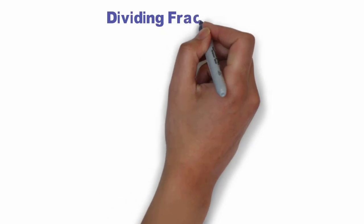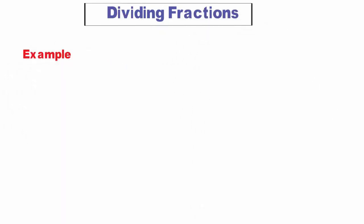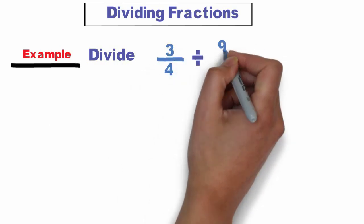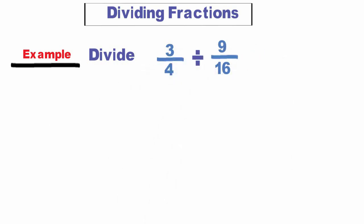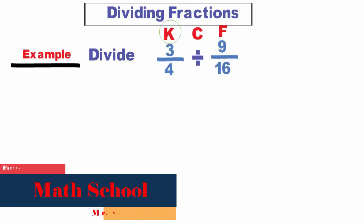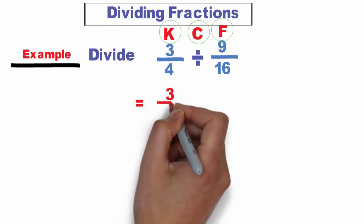Hello everyone, hello Grade 5. Our lesson today is dividing fractions. Example: divide 3 over 4 divided by 9 over 16. The key to divide two fractions is KCF. K means keep, C means change, F means flip. That means 3 over 4 divided by 9 over 16 equals — keep the first fraction as it is.